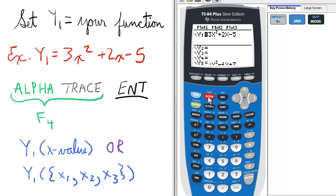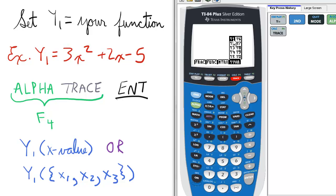Then we quit to the home screen. From there we press alpha trace for the F4 command. We want to choose y1 so we just press enter to select it, and then we enter parentheses.